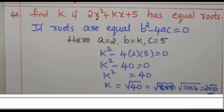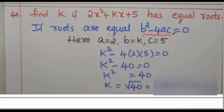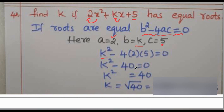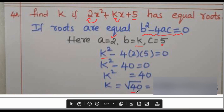Question 4: Find k if 2x squared plus kx plus 5 has equal roots. If roots are equal, then b squared minus 4ac equals 0. Here A equals 2, B equals k, and C equals 5. Substituting: k squared minus 4 times 2 times 5 equals 0, so k squared minus 40 equals 0, giving k squared equals 40, and k equals root 40.